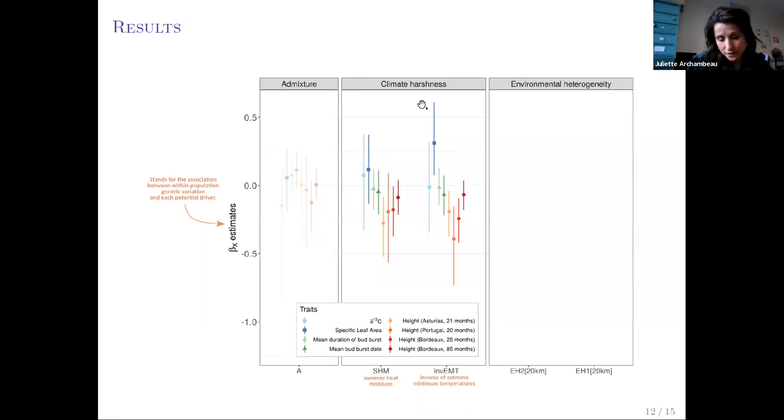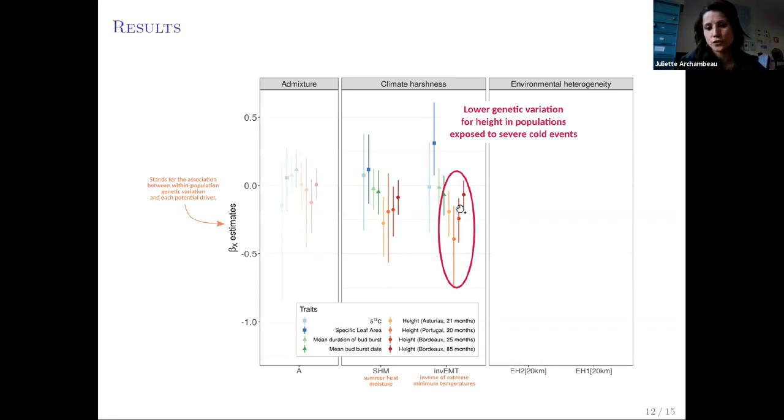Regarding the climate harshness indexes, we found lower quantitative genetic variation for height in populations subjected to severe cold events. It can be noted that there was an association in Bordeaux in the French common garden when the trees were 25 months old, but not anymore when the trees were older.